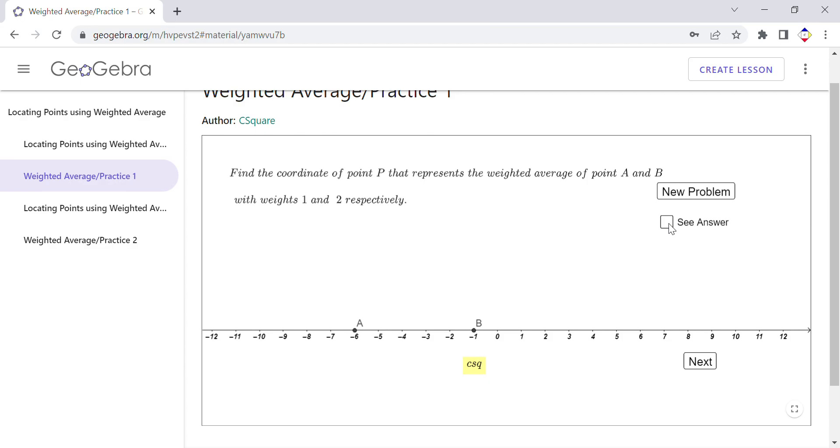You can change the problem and see the answer again until you get the correct answer and correct math for that correct answer. You can click on Next, and here we have a very similar problem. The only difference is we have three points, three different weights. Again, you can do the math and see if you get the correct answer.